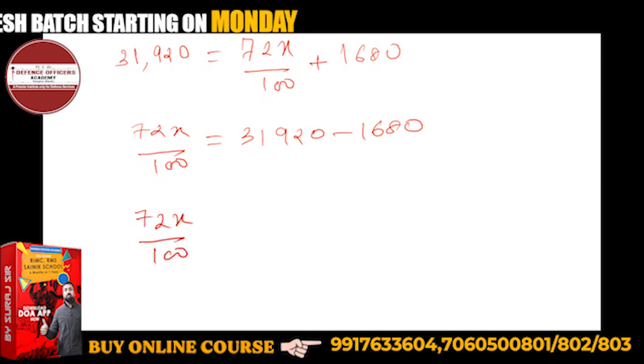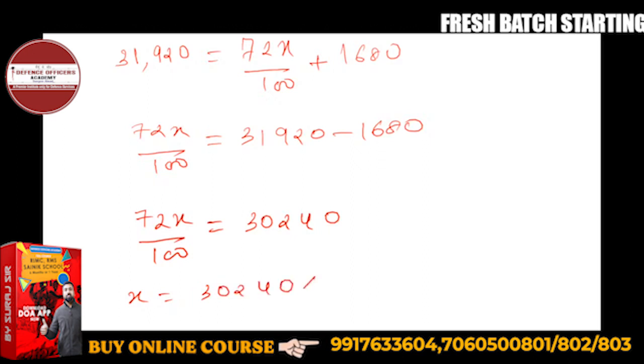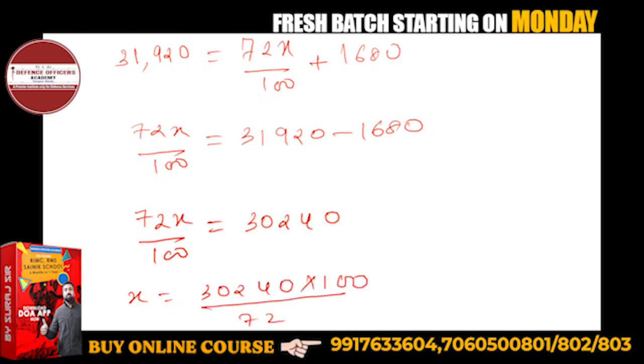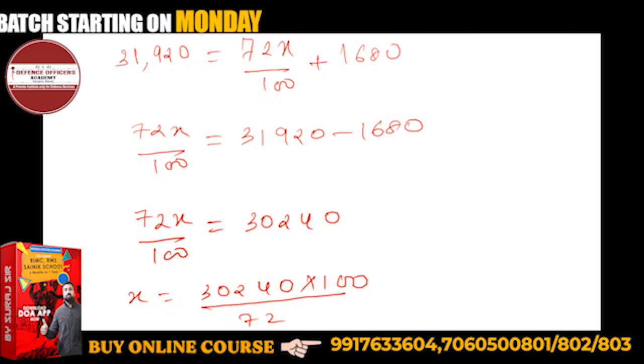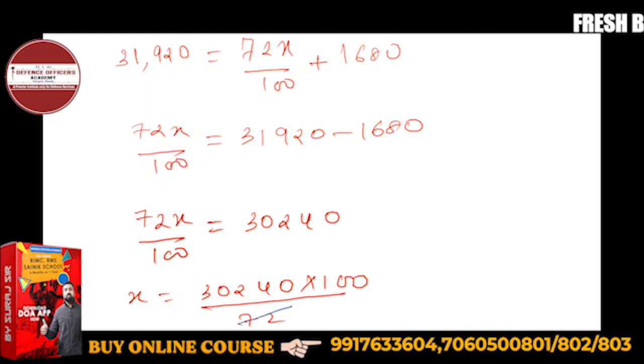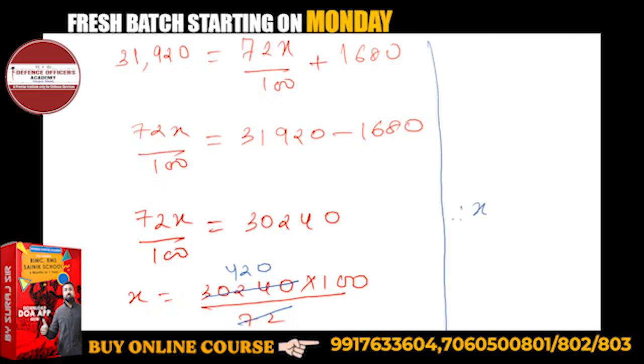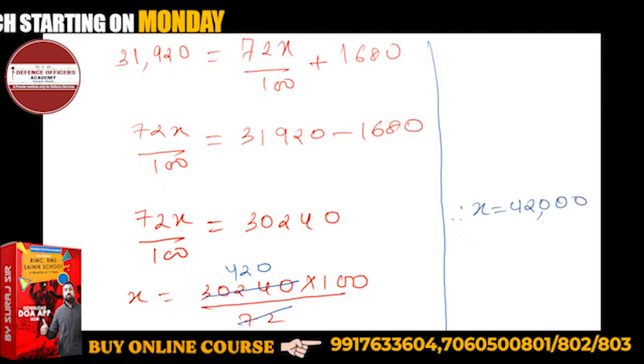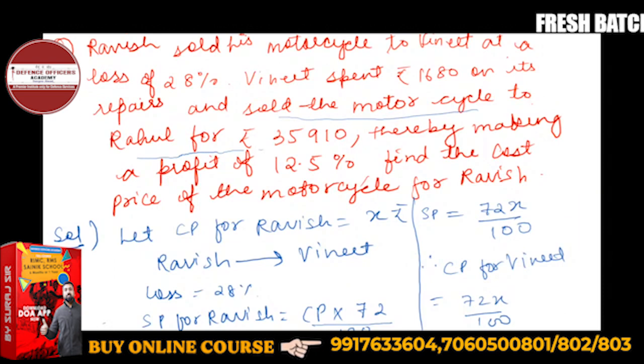72X upon 100 is equal to 30,240. So X will be nothing but 30,240 into 100 upon 72. So 72 cuts, 420 times. Therefore X will be equal to 42,000 rupees. So 42,000, this X is nothing but CP for Ravish.